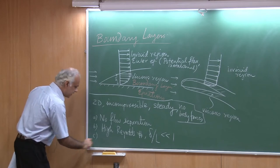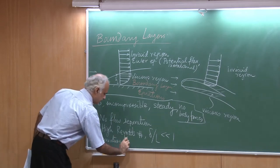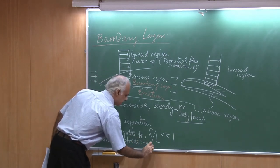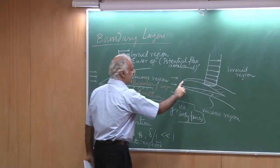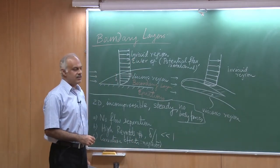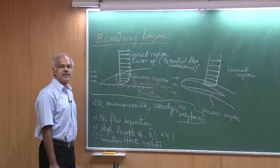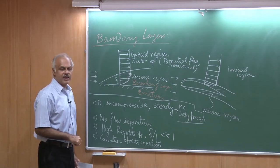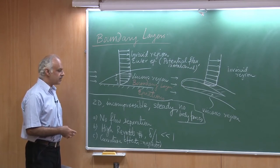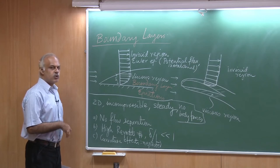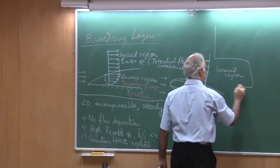Another assumption is that curvature effects are neglected. Either we have a flat surface, or even if we have a curved surface, the curvature is very gentle. We can assume the x-coordinate is along the surface of the airfoil and treat it as effectively flattened out. With these assumptions, we write down the Navier-Stokes equations and perform an order-of-magnitude analysis, discarding smaller terms to obtain simplified boundary layer equations.